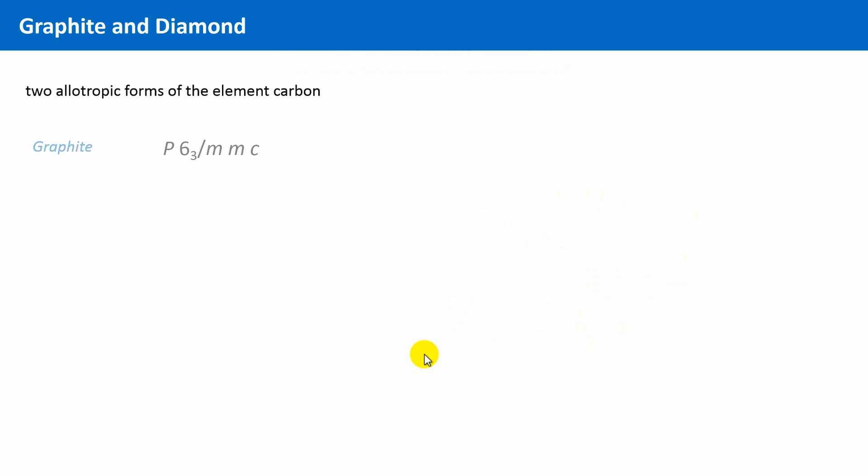Let's start with graphite. Graphite crystallizes in the space group P63 over M, MC.